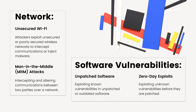3. Network. Unsecured Wi-Fi: Attackers exploit unsecured or poorly secured wireless networks to intercept communications or inject malware. Man-in-the-Middle (MiTM) Attacks: Intercepting and altering communications between two parties over a network.